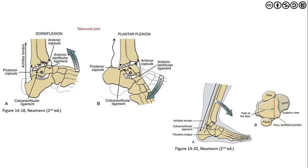The last image shows closed-chain dorsiflexion where the distal segment is fixed. Surrounding soft tissue including the Achilles tendon, calcaneofibular ligament, and fibularis longus plays a role here. This also shows the rectilinear path of the tibia moving into full dorsiflexion — it is not a straight linear path. To gain full dorsiflexion and plantar flexion, we must restore not only the rectilinear path of the tibia but also account for supination and pronation.